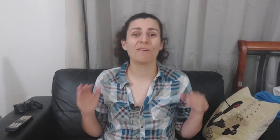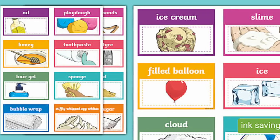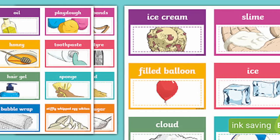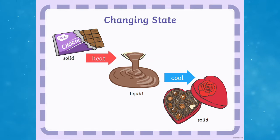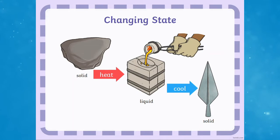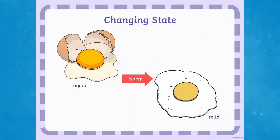You could even play a sorting game where you sort different images of materials into the three common states of matter. Then you can talk about temperature and how it affects matter. This PowerPoint presentation has some great examples of how temperature can transition matter between different states.